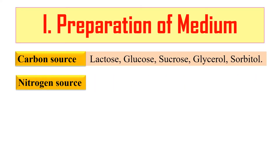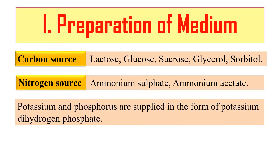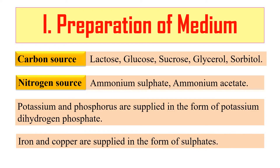The Nitrogen source is supplied in the form of Ammonium Sulphate or Ammonium Acetate. Potassium, Phosphorus, Magnesium, Sulphur, Zinc, and Copper are also present in the medium, provided in the form of salts. Potassium and Phosphorus are supplied as Potassium Dihydrogen Phosphate, and Magnesium, Iron, and Copper are supplied as Sulphates. All these elements may also be present in Corn Steep Liquor, which can be used as well.